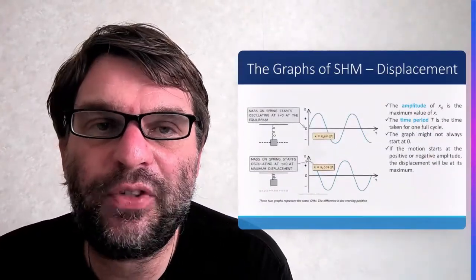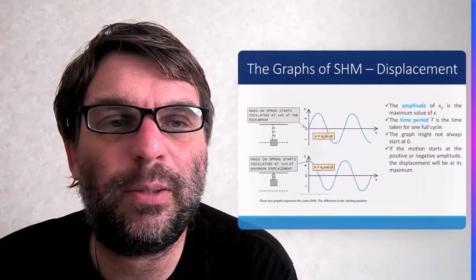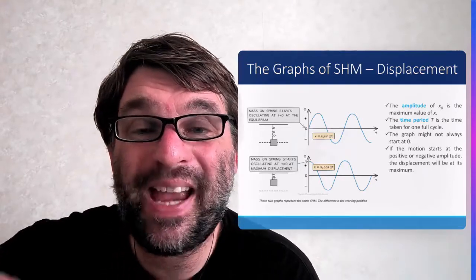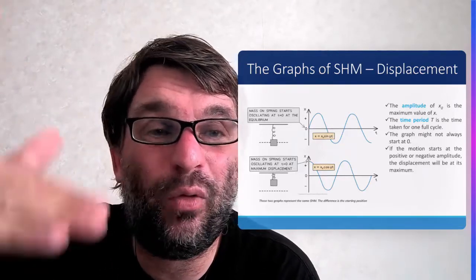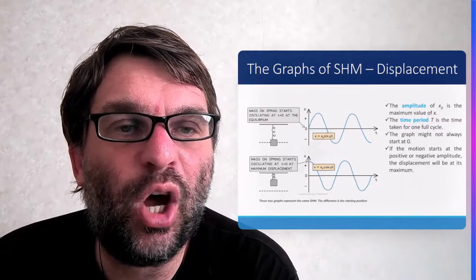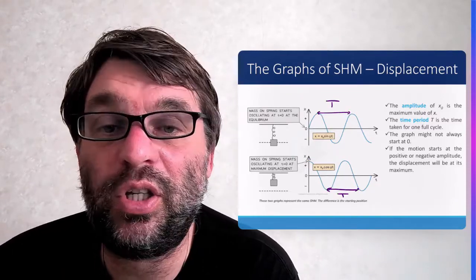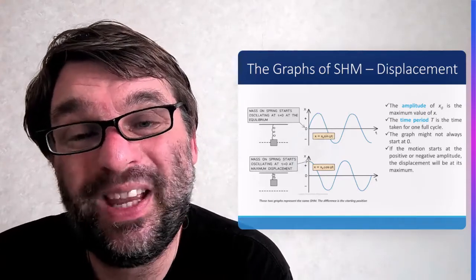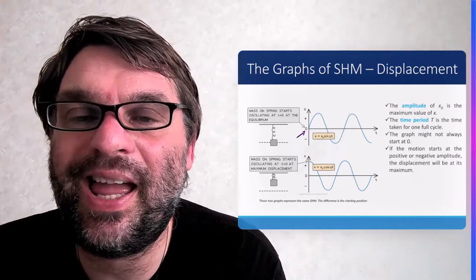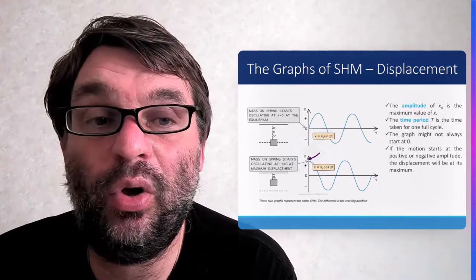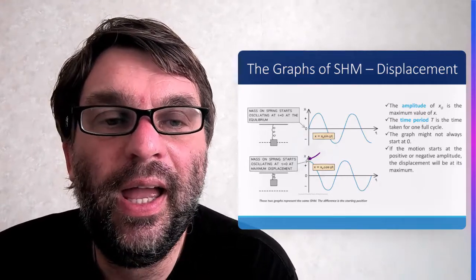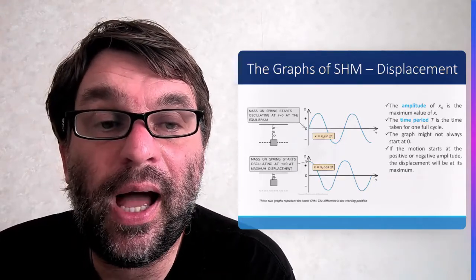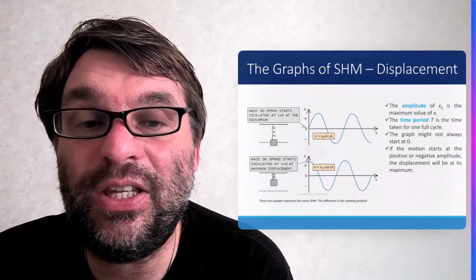We have three graphs of SHM. The first is displacement, which has an amplitude — the maximum displacement, either negative or positive — which is X₀. The time period, capital T, is the time for one full oscillation. The graph might start at zero, which is the equilibrium position, but it can also start at any point in the oscillation. If the motion starts at either the positive or negative amplitude, this is where displacement is at a maximum.